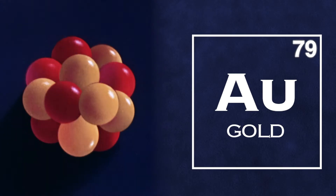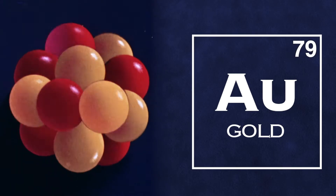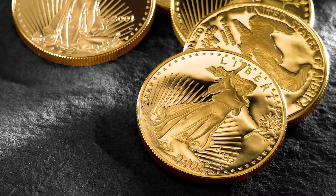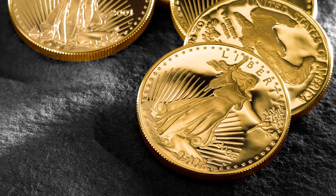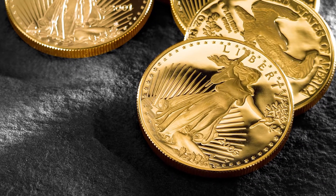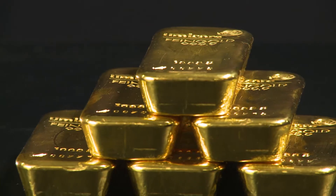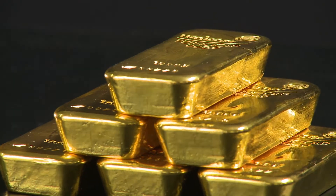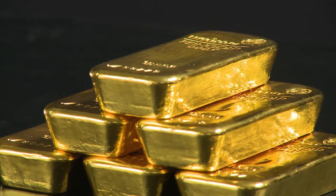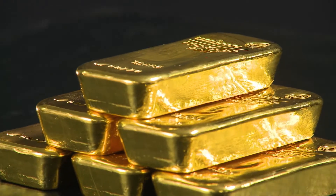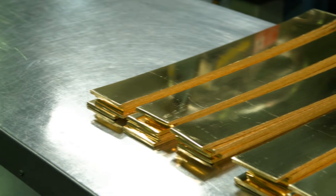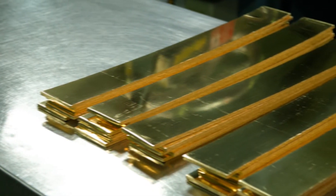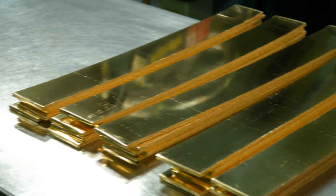This is why gold is so dense and heavy. Gold is one of the least reactive and most solid chemical elements. It is also the most malleable of all metals. In fact, a single ounce of gold could be compressed into a thin sheet that would span a total of 300 square feet.